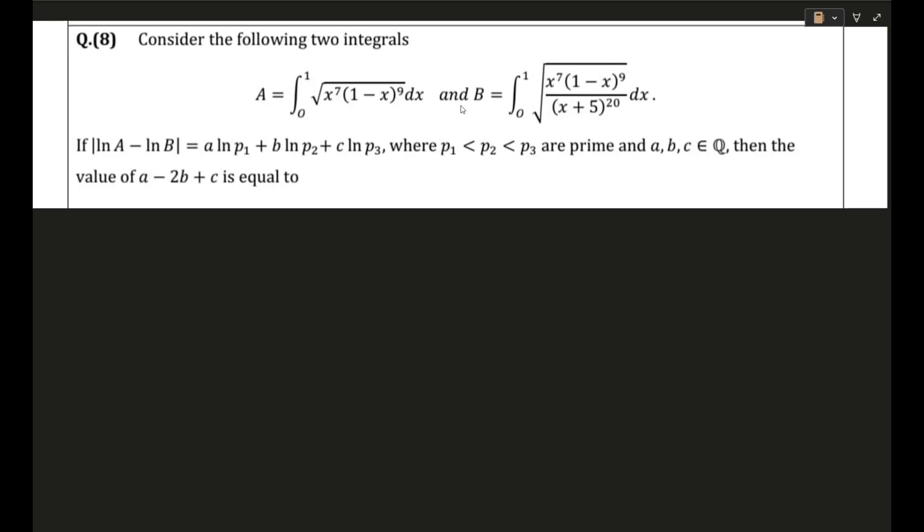Okay so guys, I hope now it's time for us to solve this. So basically this question contains two integrals which are very very similar except for this weird (x+5)^20 in this particular integral. And it tells that |ln a - ln b| is equal to this thing and we have to find out the value of a - 2b + c.